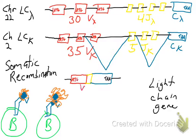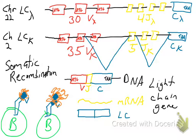That joining gene segment gets cut and stitched to one of the constant gene segments, and what you're left with is a functional light-chain gene. Before recombination, those genes won't make any proteins. Only after somatic recombination — stitching one V and one J together with one C — do you have a start codon, a stop codon, and an open reading frame that can be transcribed, translated, and made into protein.